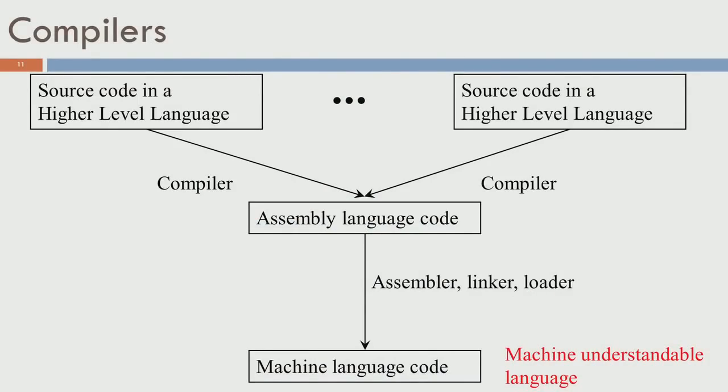You may have more than one such source program available, and you give this to a tool called a compiler. The compiler is essentially a piece of software which can convert this high-level code into assembly code, and in turn an assembler can take this assembly code and generate machine code.